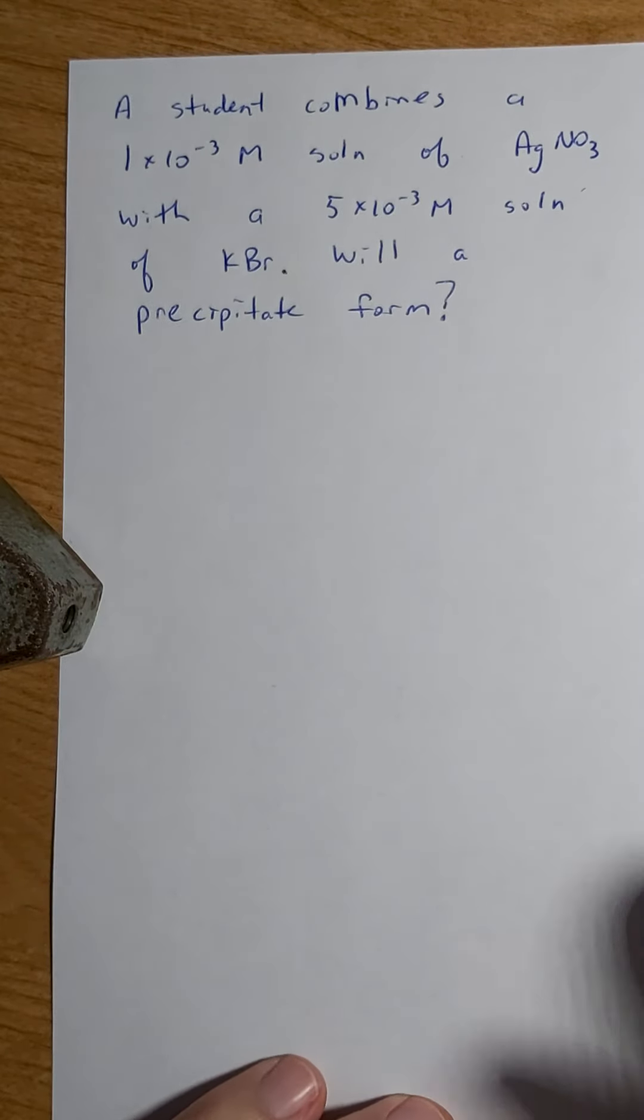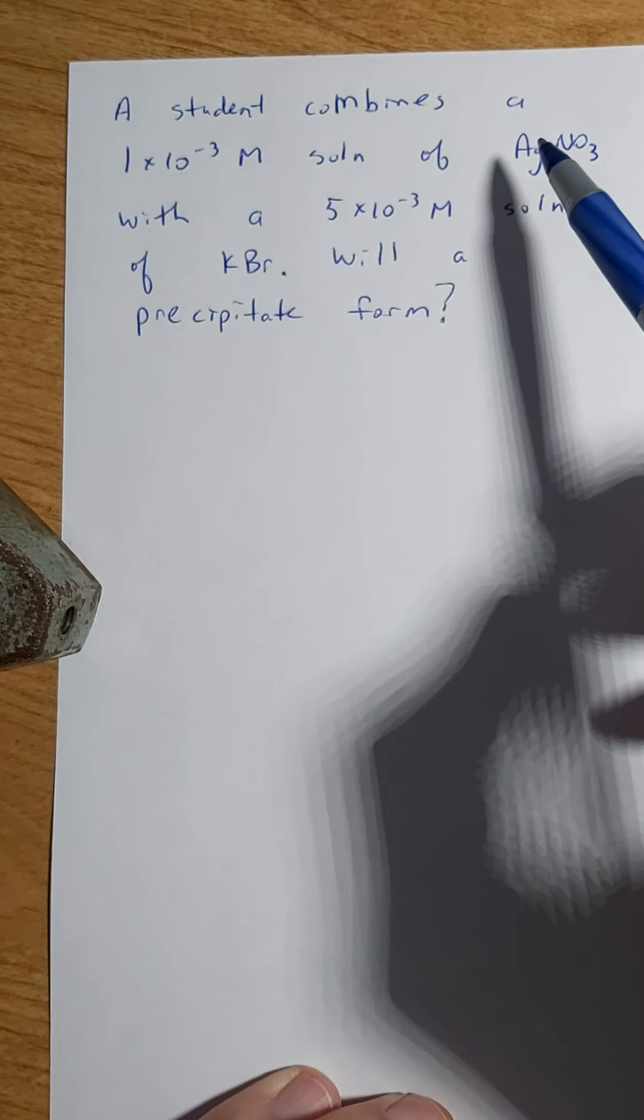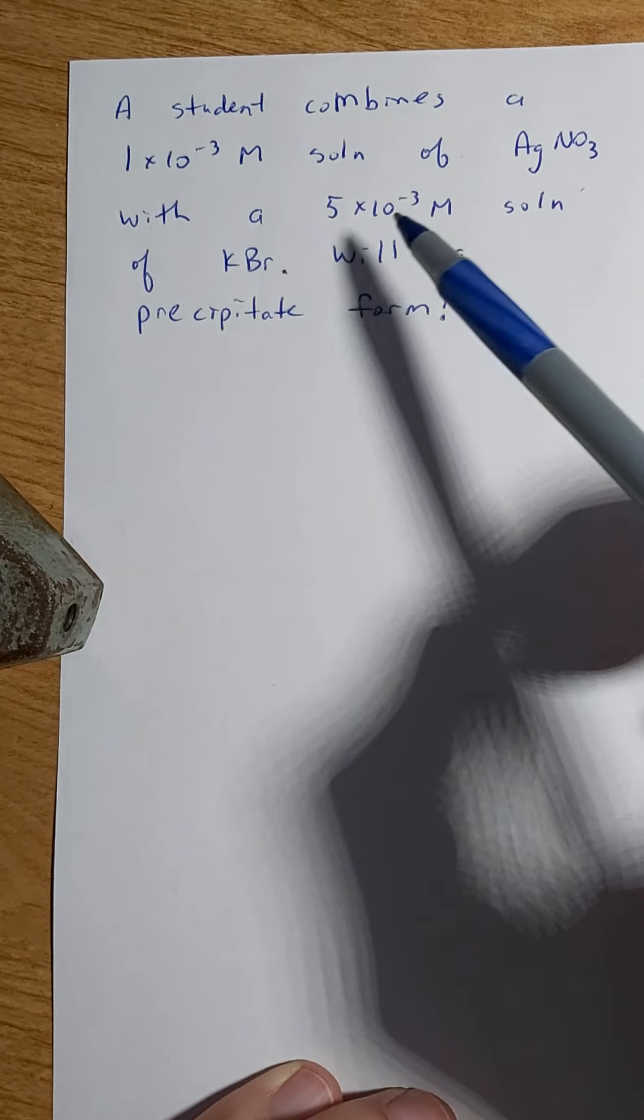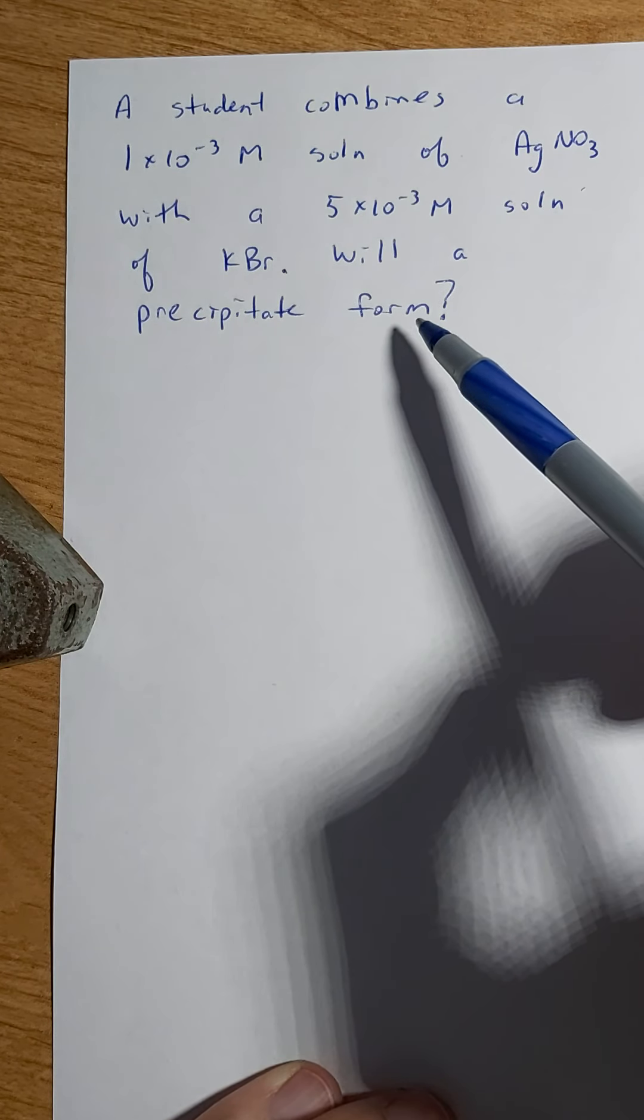All right, will a precipitate form? So let's try a question here. A student combines a 1x10^-3 M solution of AgNO3 with a 5x10^-3 M solution of KBr. Will a precipitate form?